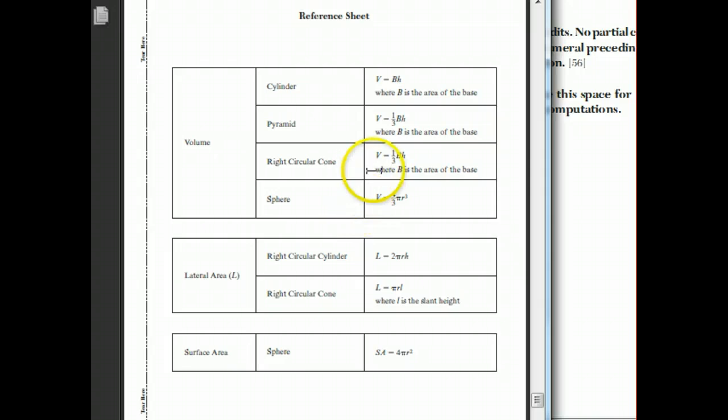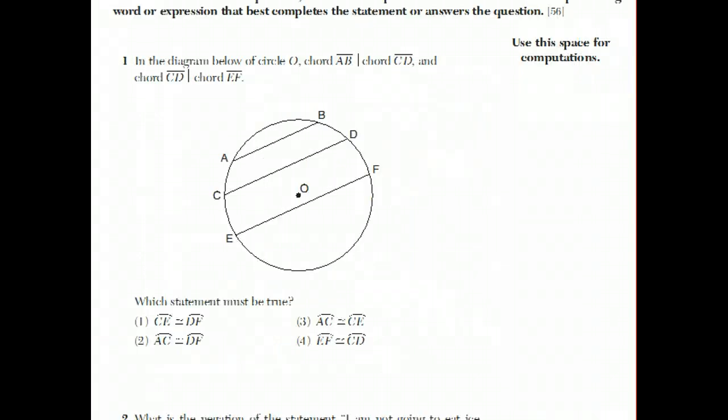There are some formulas that they give you in the Regents. You have this reference sheet with a formula for the volume of various three-dimensional objects: cylinder, pyramid, right cone, sphere, and the lateral area of a cylinder, a cone, and the surface area of a sphere. So part one, there are 28 questions worth two points each, and let's see how this goes.